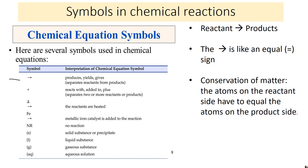If you have two products, they'll be separated with a plus. If you see something written over the arrow, like a triangle, a triangle means heat is added. An element or compound over the arrow would be a catalyst — something used to speed up the reaction. 'NR' written instead of products means there's no reaction. And then (s), (l), (g), and (aq) stand for solid, liquid, gas, or aqueous, meaning dissolved in water.